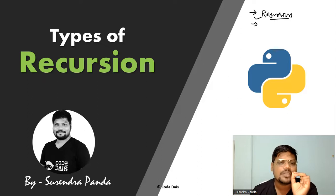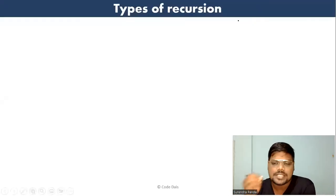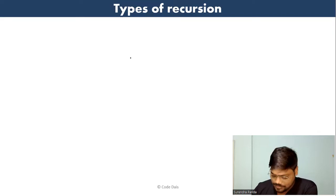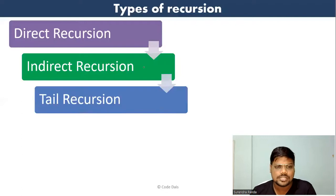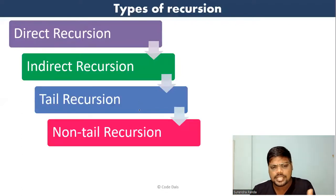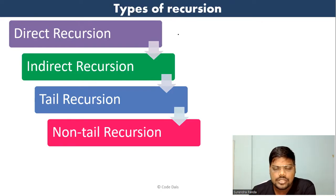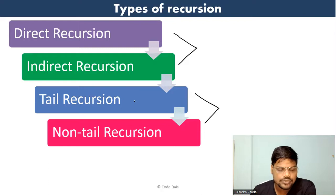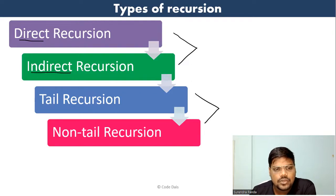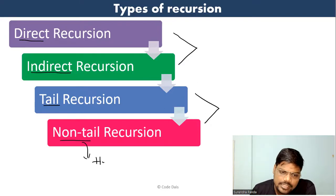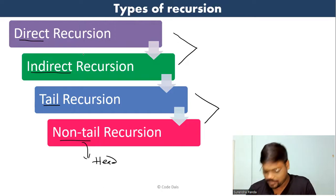So the topic name is types of recursions. Recursions are basically of four types: first, direct recursion; second, indirect recursion; third, tail recursion; and fourth, non-tail recursion, also called head recursion. In this video I'm going to discuss direct and indirect recursion, and in the next video tail and non-tail recursion.